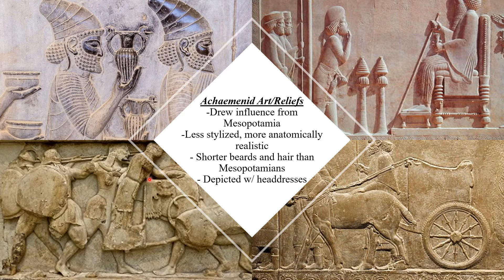Apparently, the Achaemenids reserved longer hair and beards for their kings. We also see some scenes of Achaemenid warfare in the bottom section of this slide. You can see that they're giving attention to the muscles of their subjects, but in a way that's more anatomically accurate and realistic than that of the Assyrians, which was much more stylized.